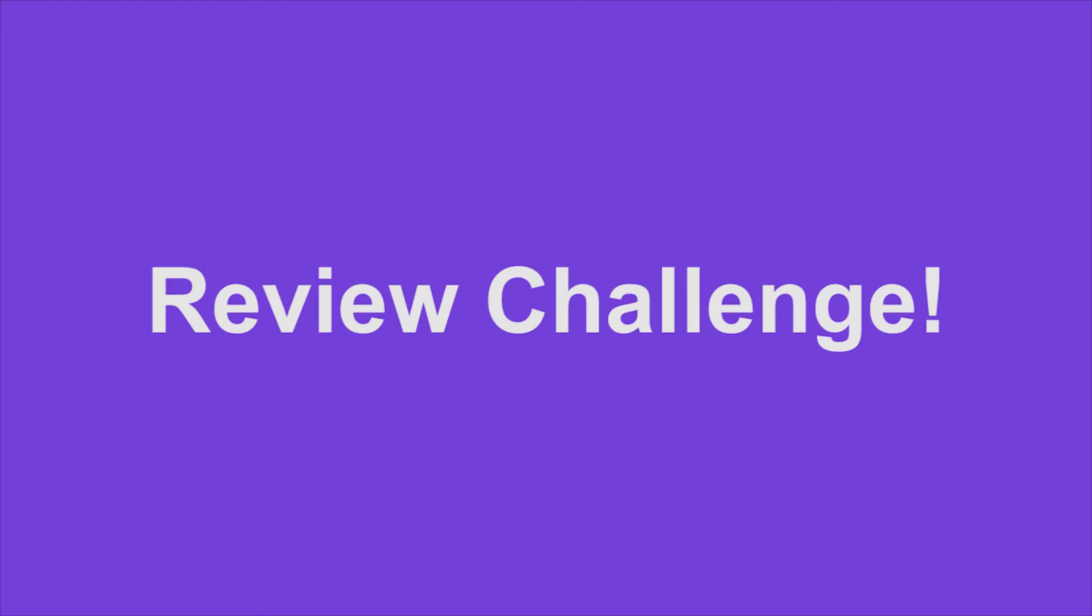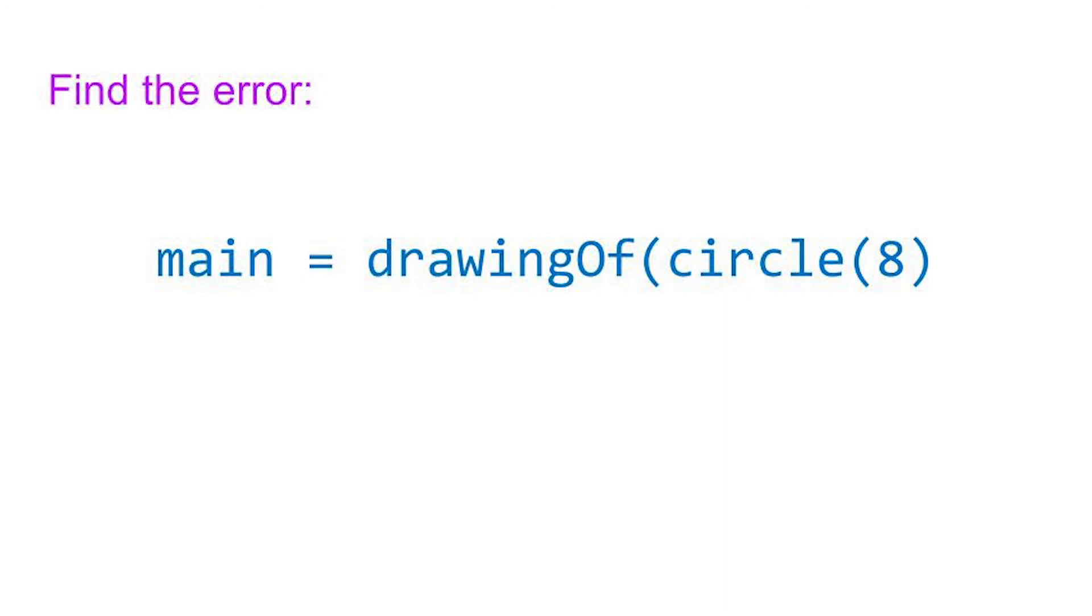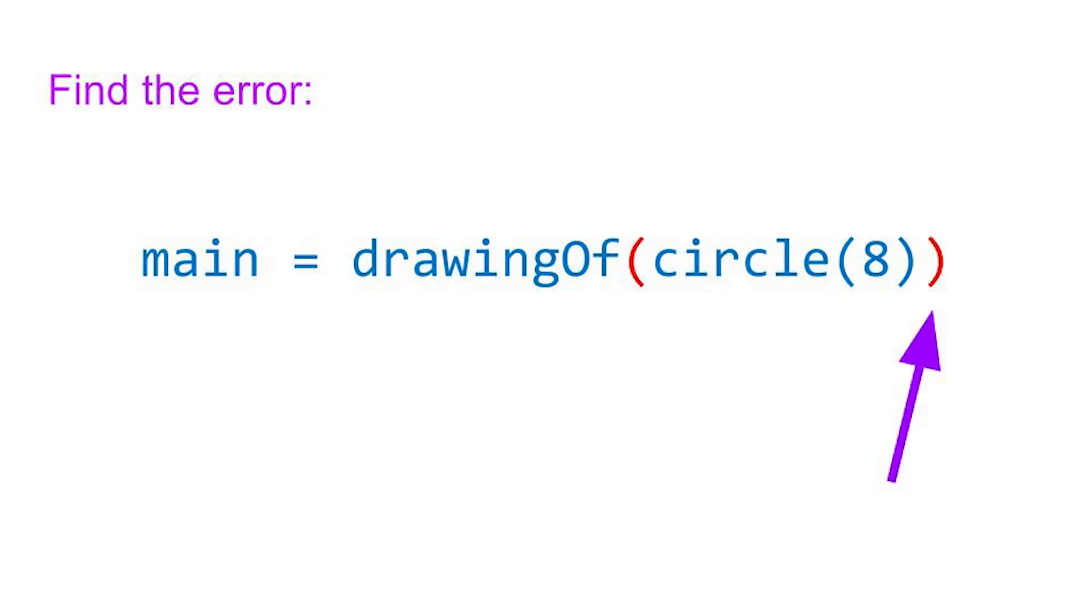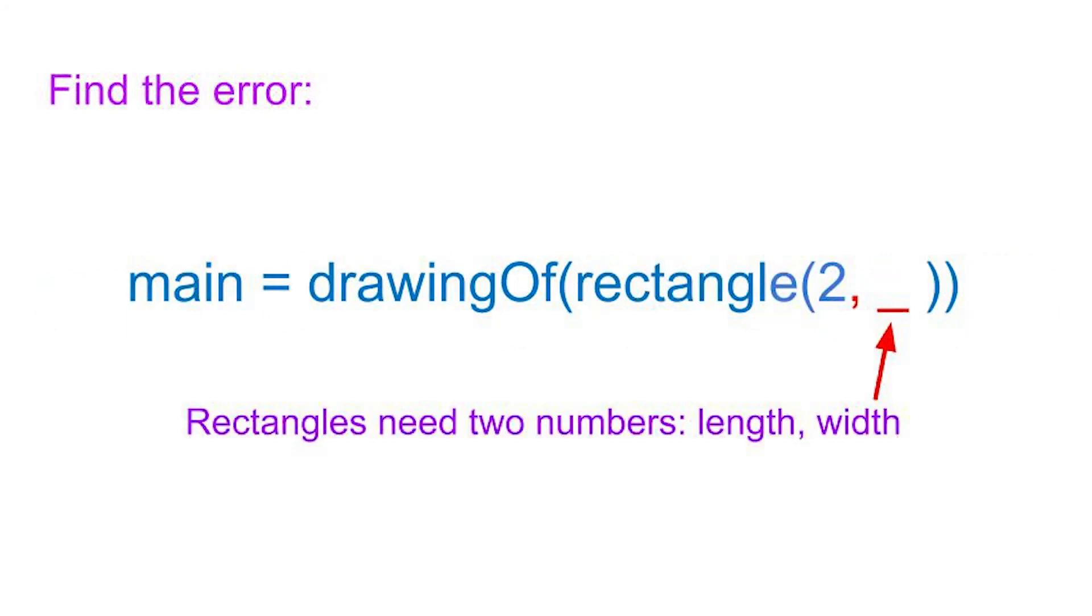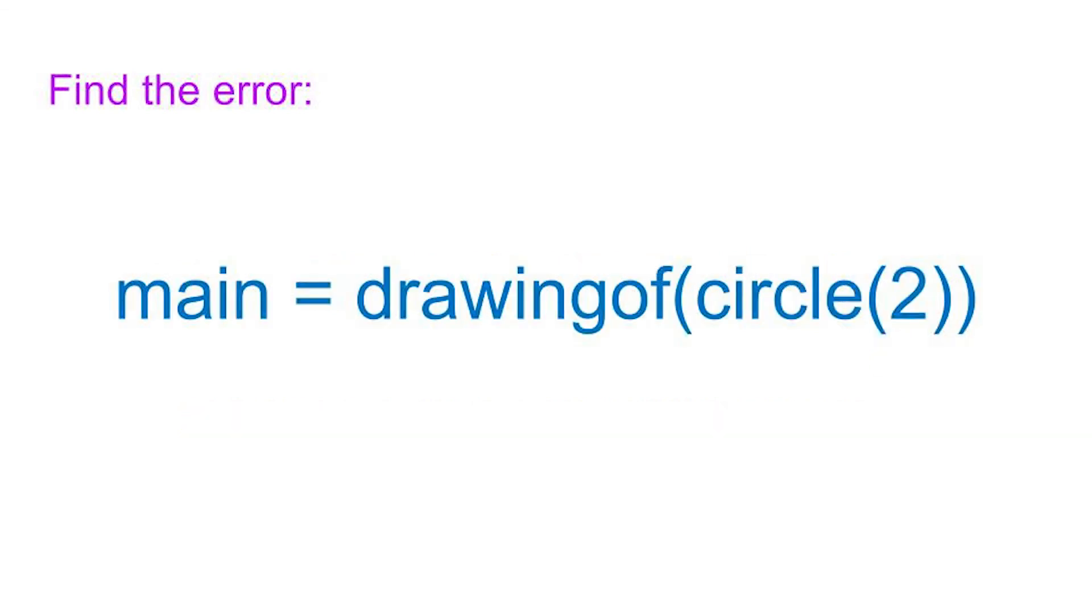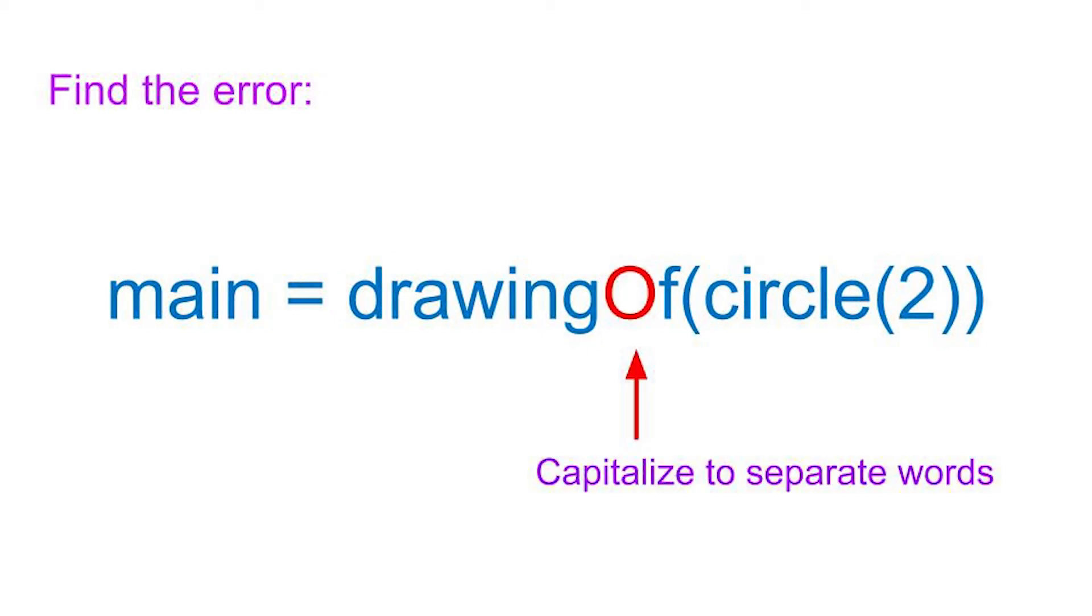Now let's do a review challenge of everything we've learned so far. See if you can find the error in this program. Did you get it? The closing parenthesis for the drawing of function was missing. Find the error in this program. Rectangles need two numbers, a length and a width in their parameter. That one only had one, which is how circles are drawn, but rectangles need two. How about this one? There was no camel case. We need to capitalize to separate words, so the O needs to be capitalized in the drawing of function.